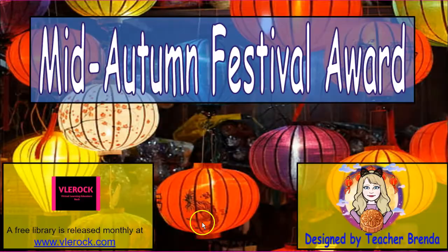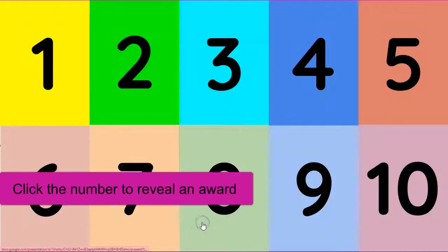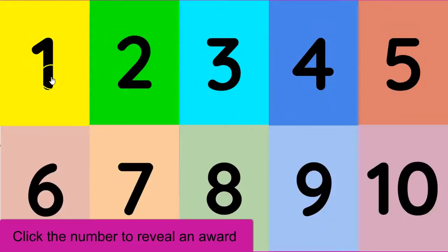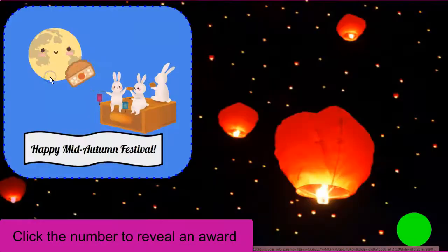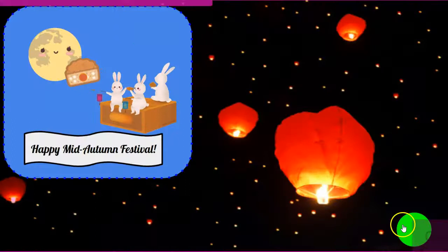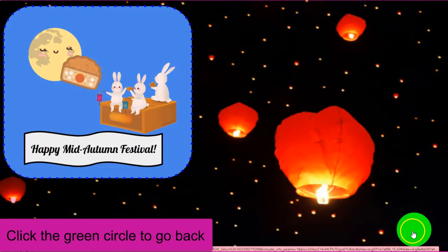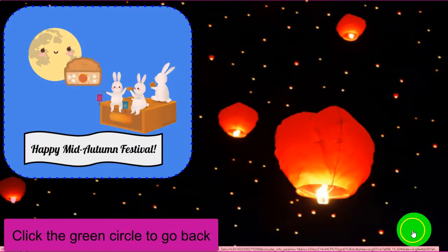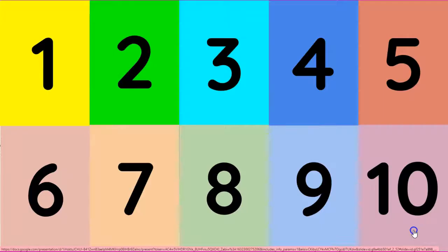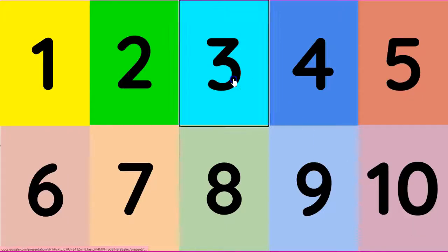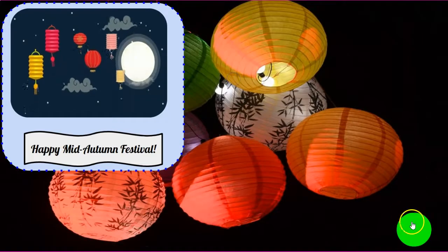You go into the second page and you just click number one and you'll have a greeting there with a moving gift that says Happy Mid-Autumn Festival. And it is the same for each number.